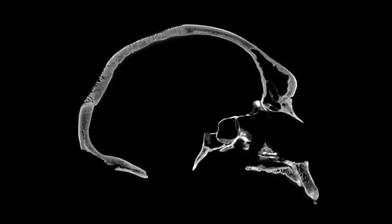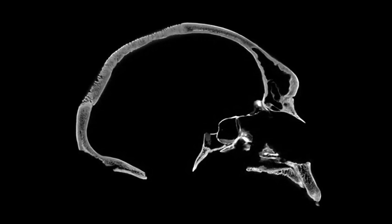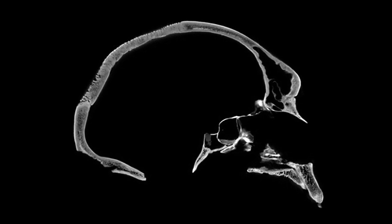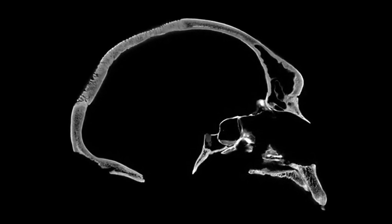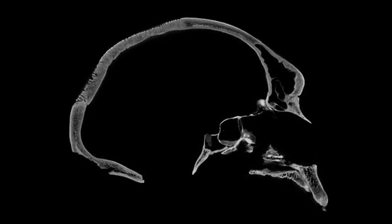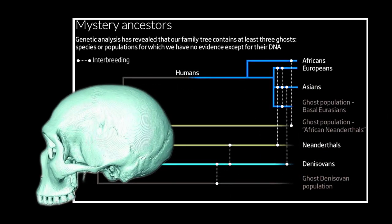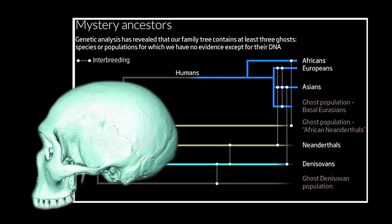We know humans have a shared ancestor with the extinct Neanderthals, our closest prehistoric relatives. However, the identity of this old ancestor population is unknown because fossils from the Middle Pleistocene epoch, when the lineage split, are extremely sparse and fragmented.